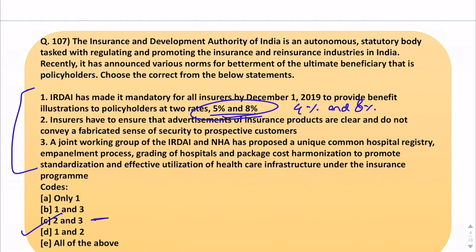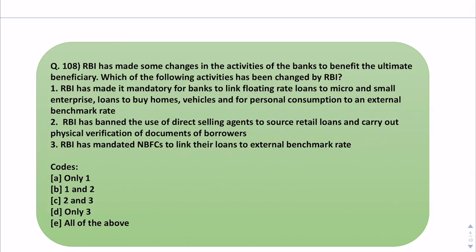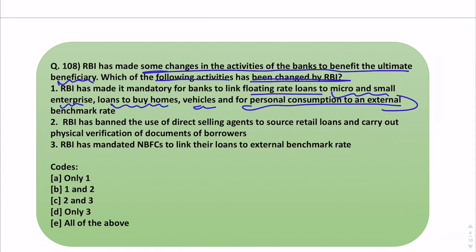The next question says RBI has made some changes in the activities of banks to benefit the ultimate beneficiary. Which of the following activities has been changed by RBI? First: it made it mandatory for banks to link floating rate loans to micro and small enterprise loans, home loans, vehicle loans, and personal consumption loans to an external benchmark rate. Second: RBI has banned the use of direct selling agents to source retail loans and carry out physical verification of borrower documents.